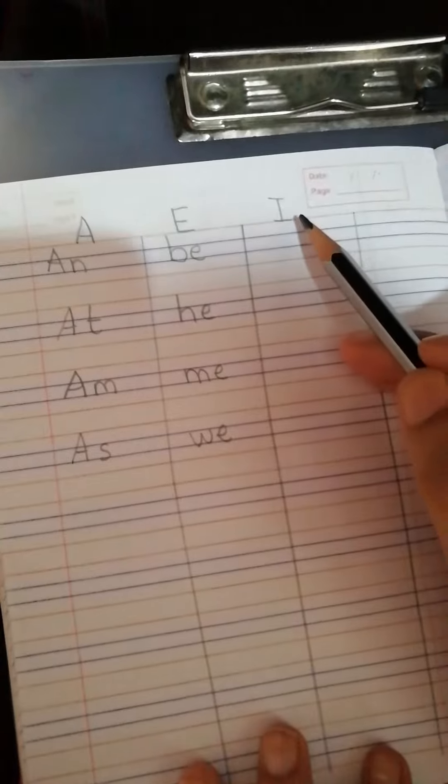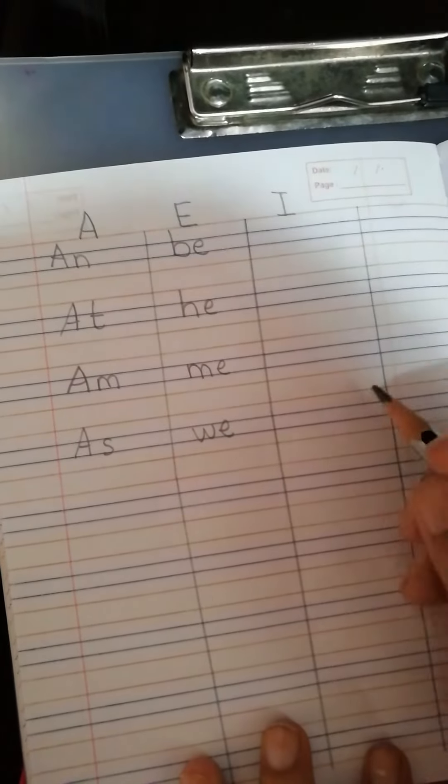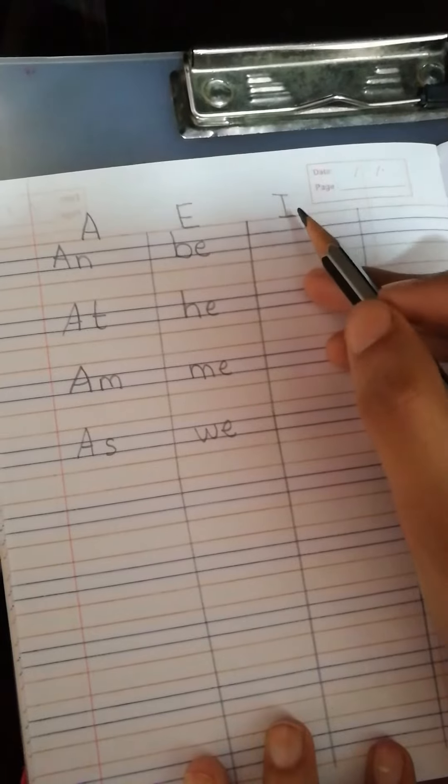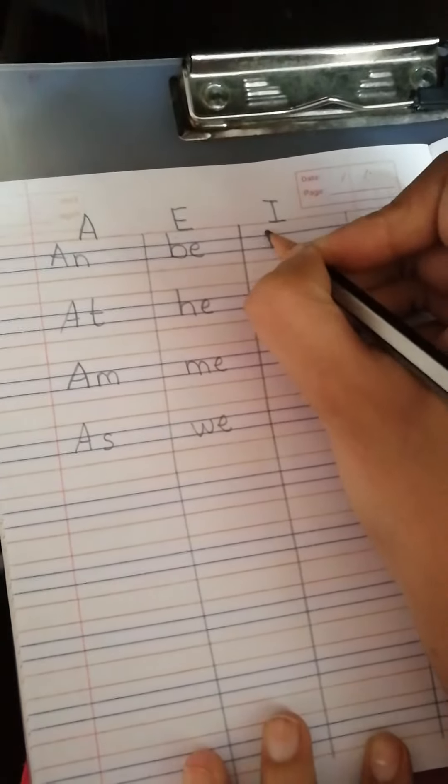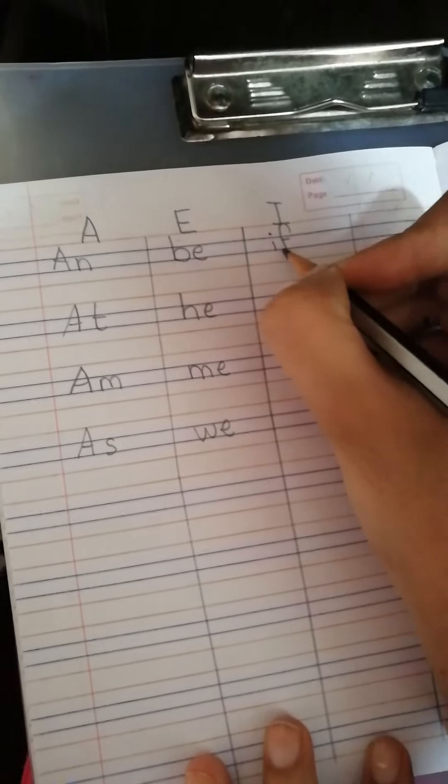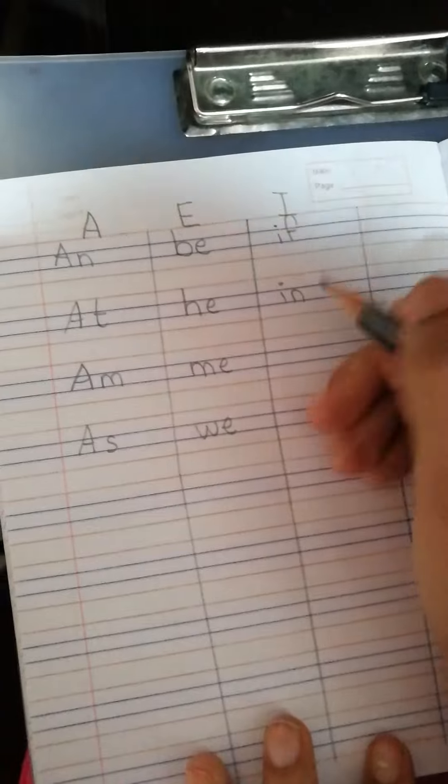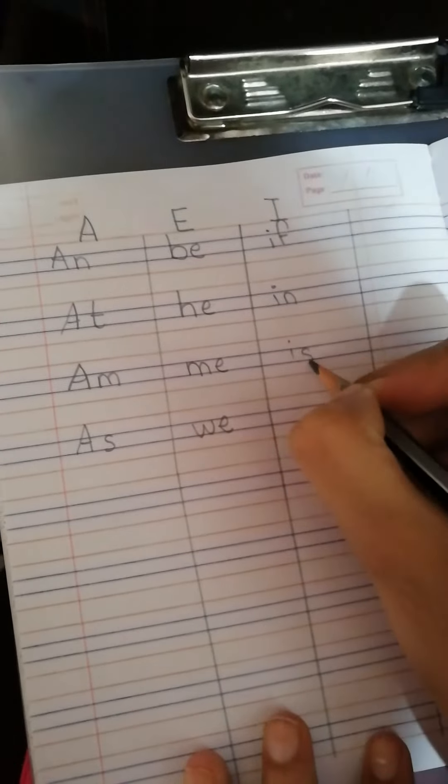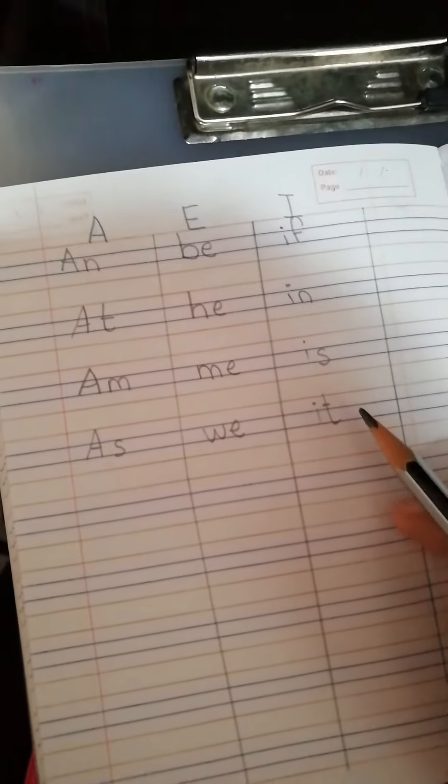And now the turn of vowel I. And the sound is E. Let us write the words that has the letter I in it. Isn't it easy, children?